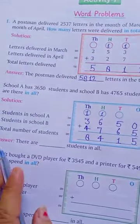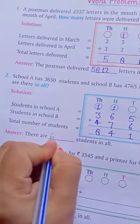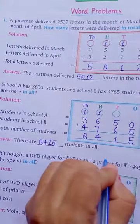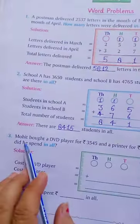Total students combined. Okay. Now, in answer, there are 8,415 students in all. Now, in third number you have given,